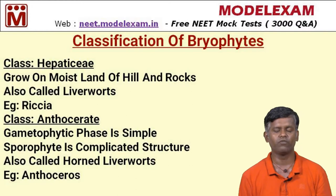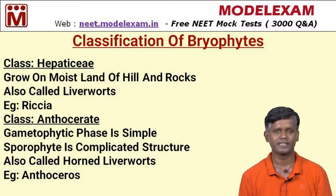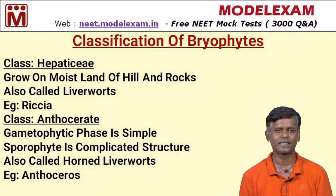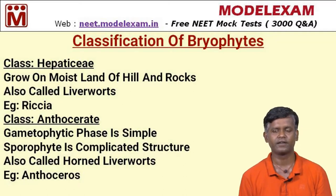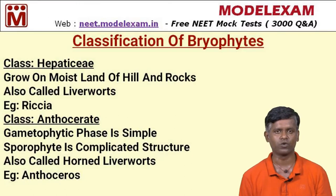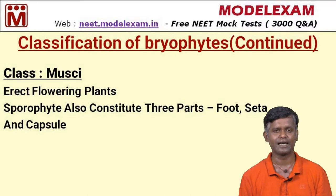Bryophytes are classified into four classes. The first is Hepaticae, which grow mostly on moist land of hills and rocks, also called liverworts, with Riccia as the best example. The second is Anthocerotae, which have a gametophytic phase with simple sporophytes and complicated structure, also called horned liverworts. The third class is Musci.